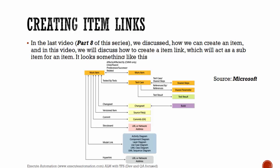Creating item links. In the last video, Part 8, we discussed how to create a work item. In this video we will discuss how to create an item link, which acts as a sub-item for an item. A work item can be anything — a PBI, a task, a bug, a test case, etc. Within a test case you can have multiple work item links such as shared steps, shared parameters, and test results. Within a work item you can also have a changeset link related to a build.